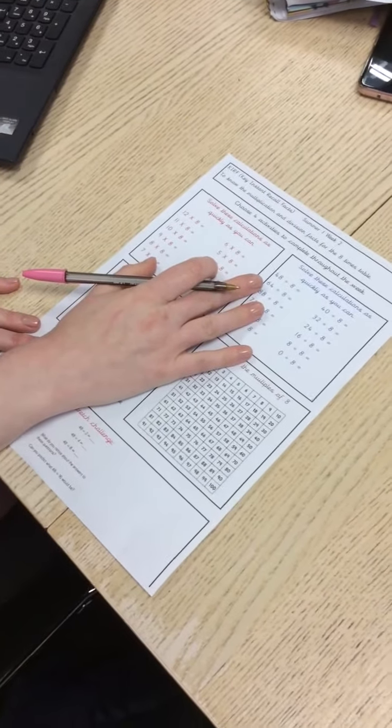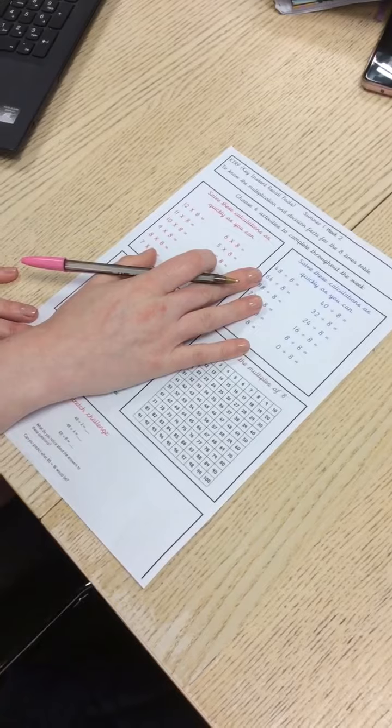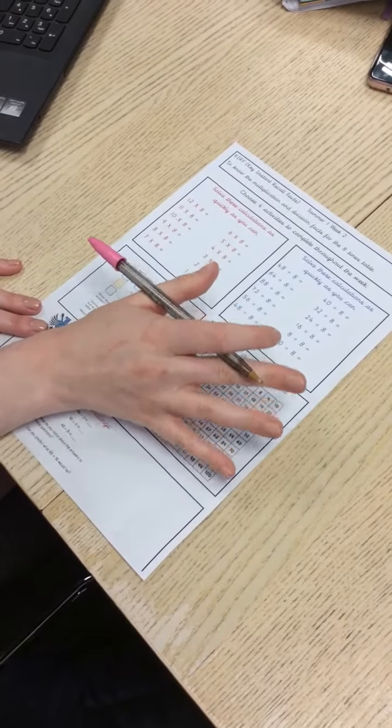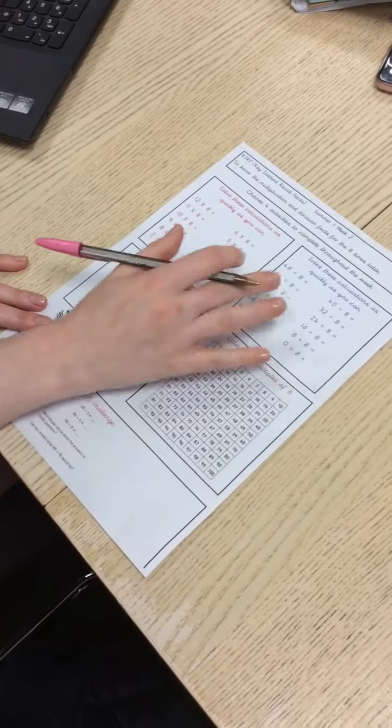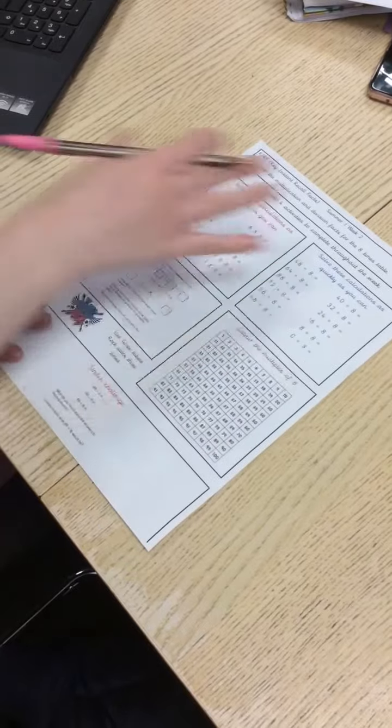Okay, your curve target this term children is the eight times table, and some of you have got the five times table as well. So you'll know which one is yours by the homework that you get. Homework looks just like normal and you need to do four activities a week.